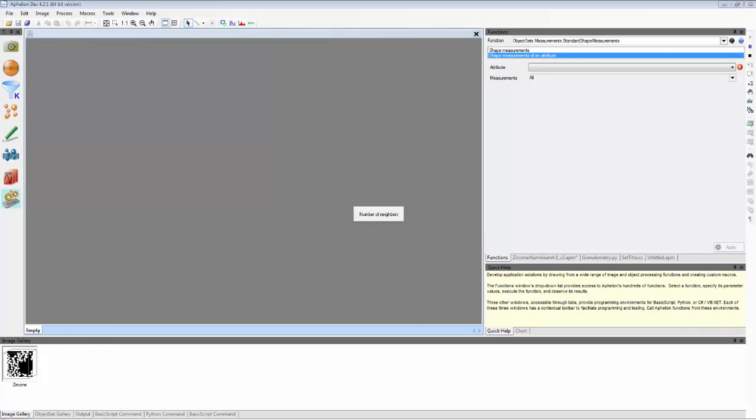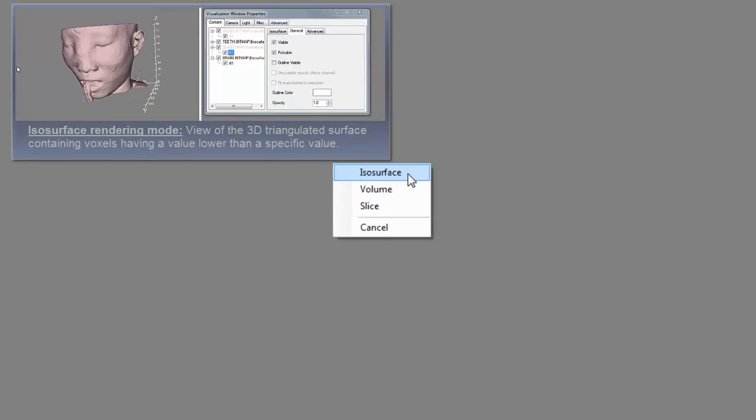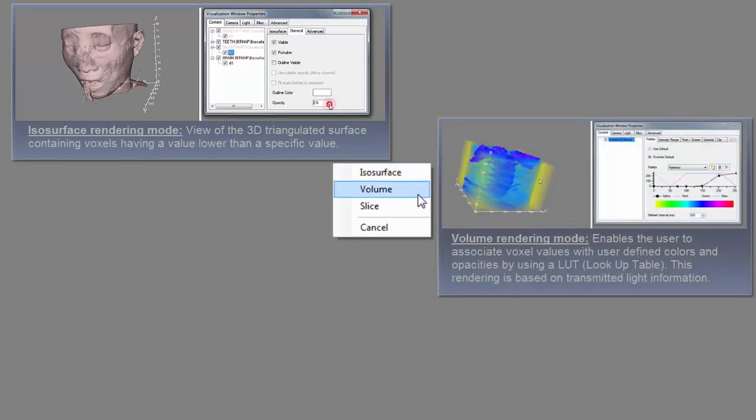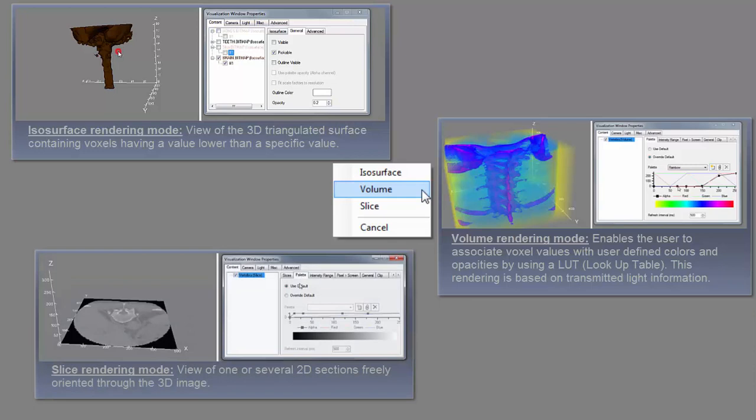the input image can be dropped into the visualization window and viewed using isosurface rendering to produce a 3D triangulated surface based on those voxels with a value that is less than a user-specified value, or volume rendering to produce transparent color images that can show the internal structure of the 3D objects,